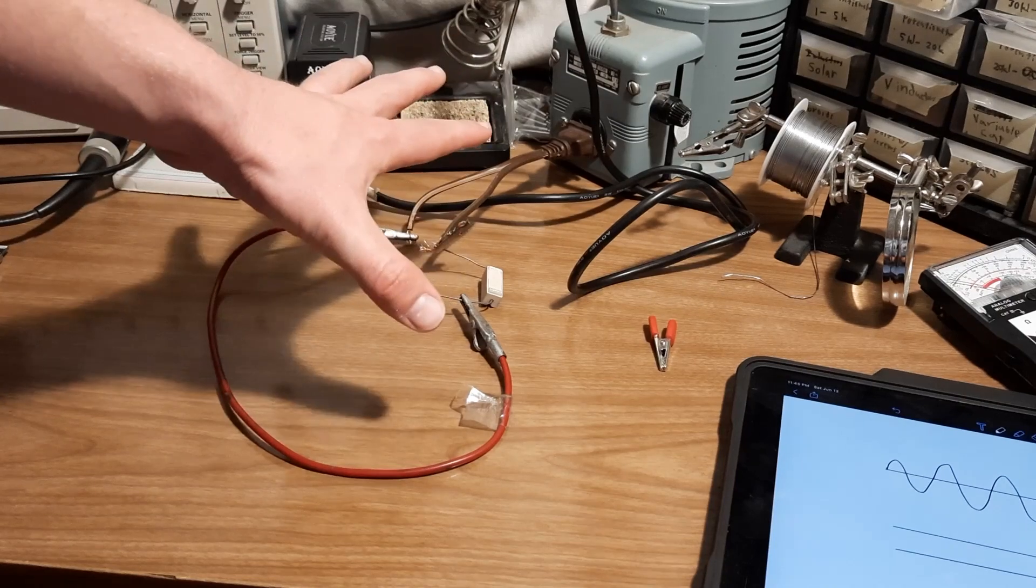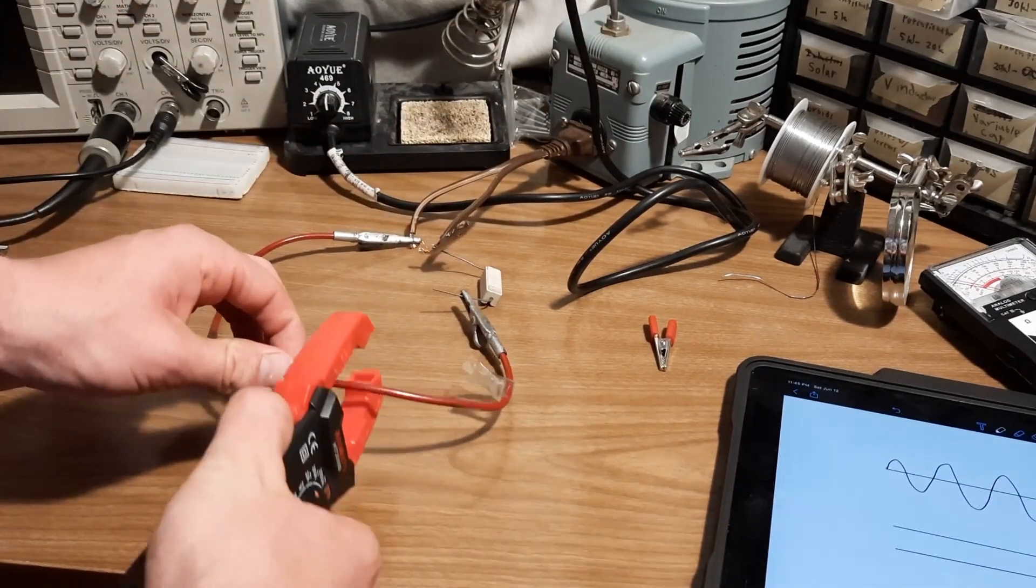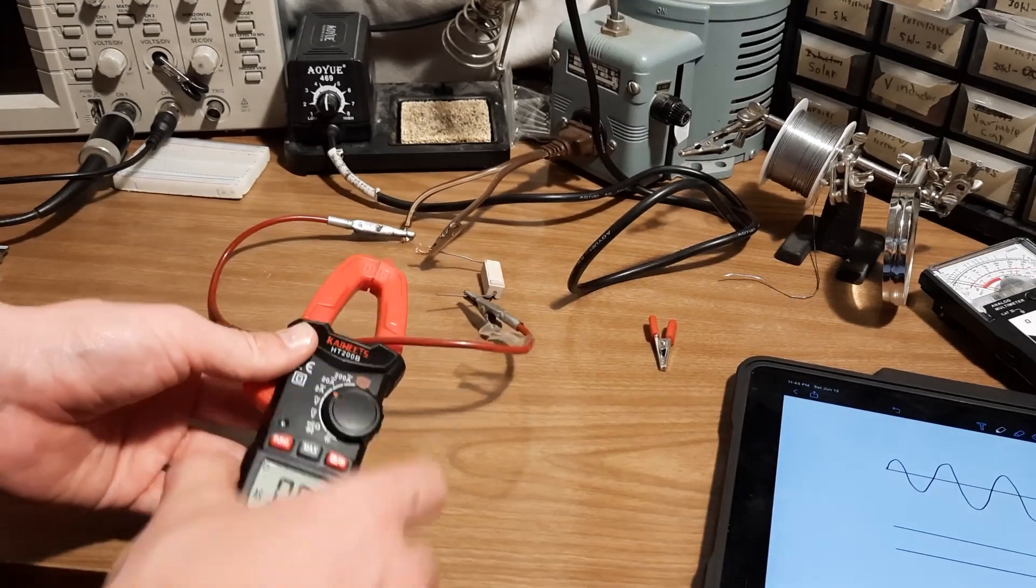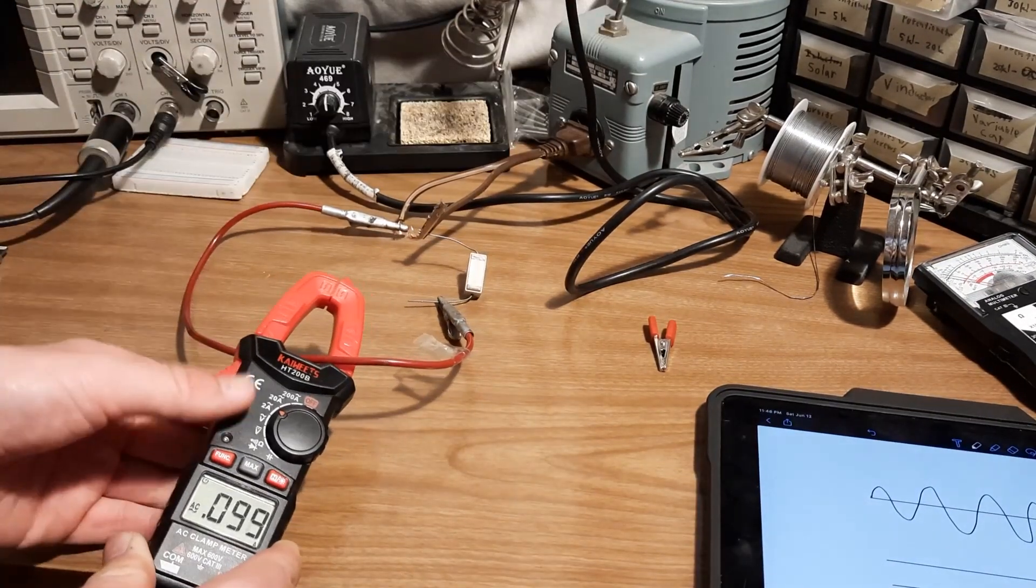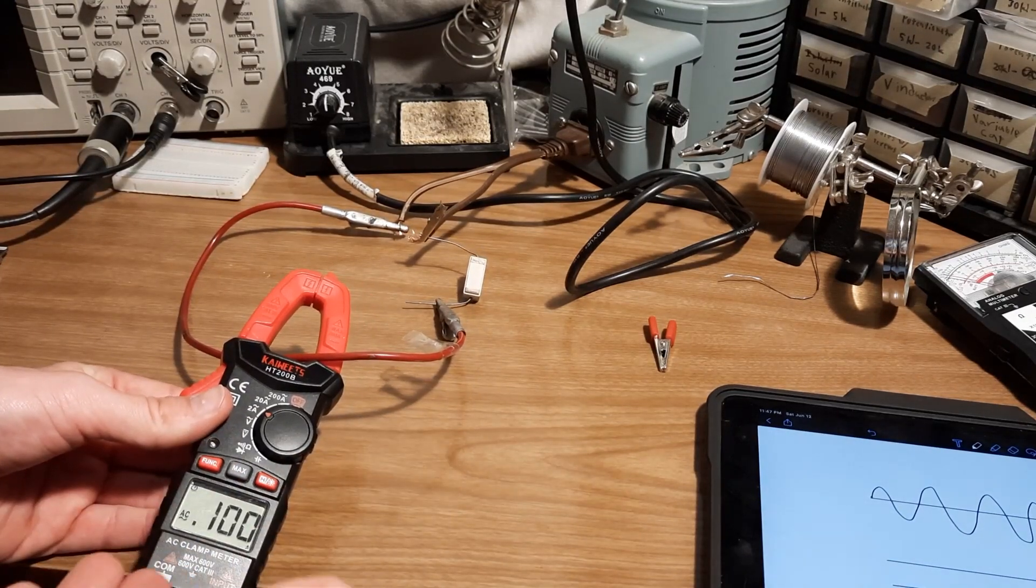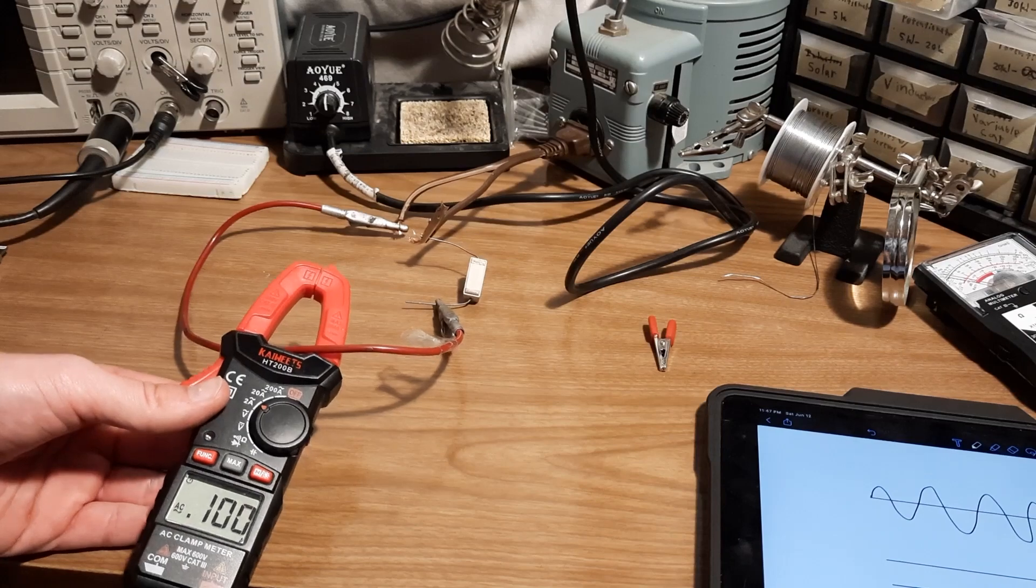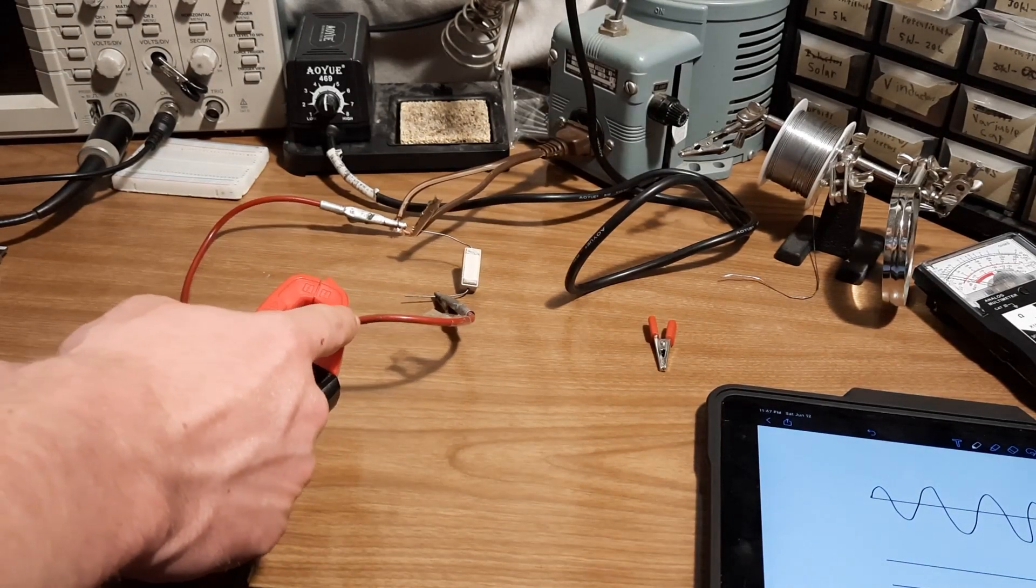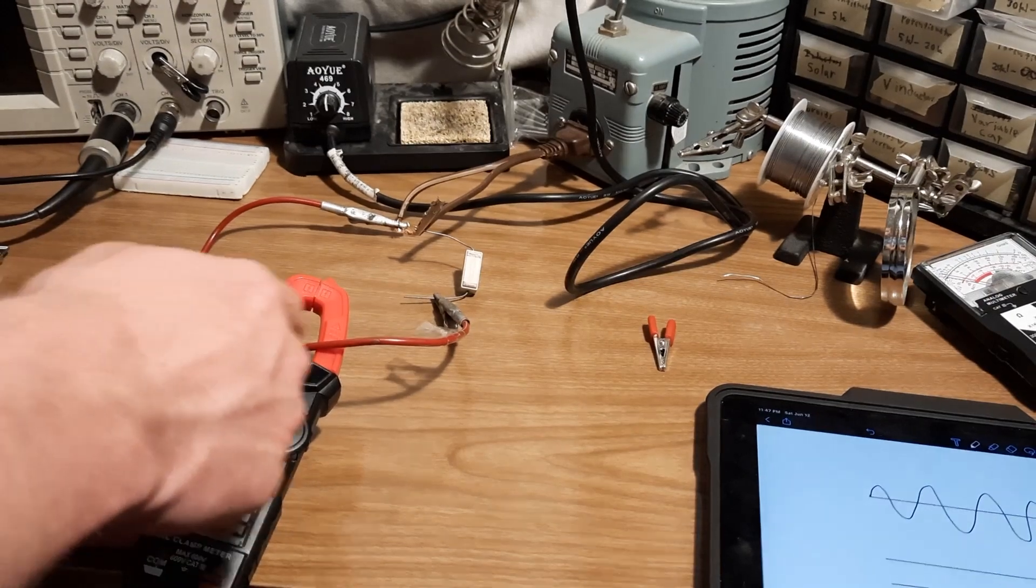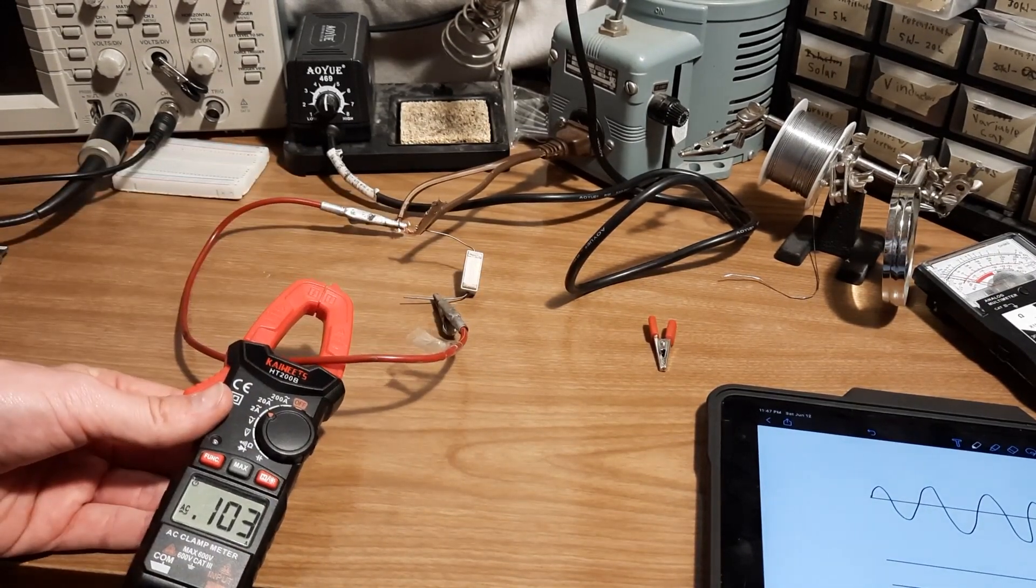So here's the setup. I have my variac connected through a 600 ohm resistor, and a wire that I can clamp my clamp meter around. When I turn on this variac, you're able to read plain and clear that there are 100 milliamps flowing through this wire. Now this would absolutely not work if there was DC current flowing through this wire. This only works because the current flowing through this wire is switching back and forth 60 times per second. Why is that?